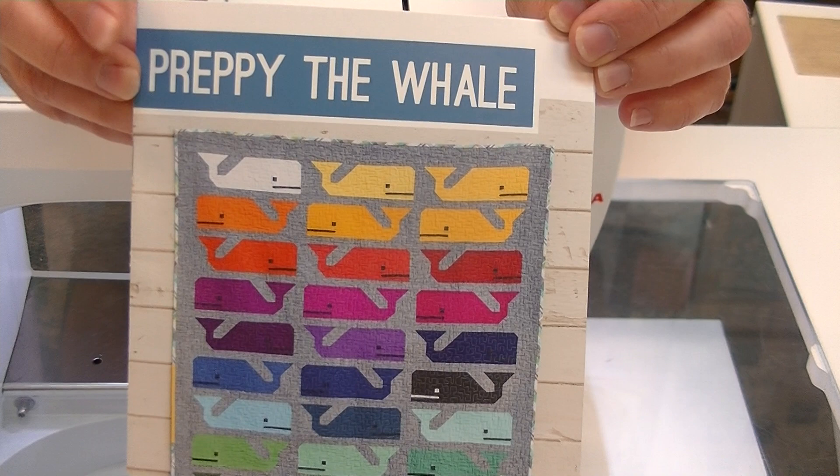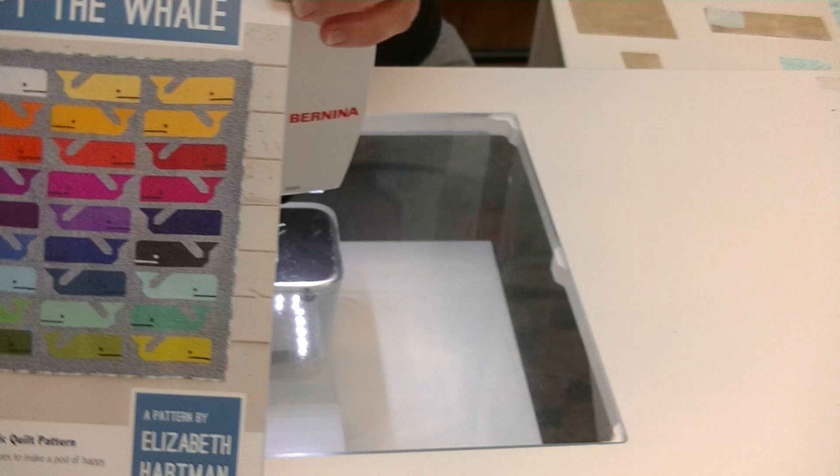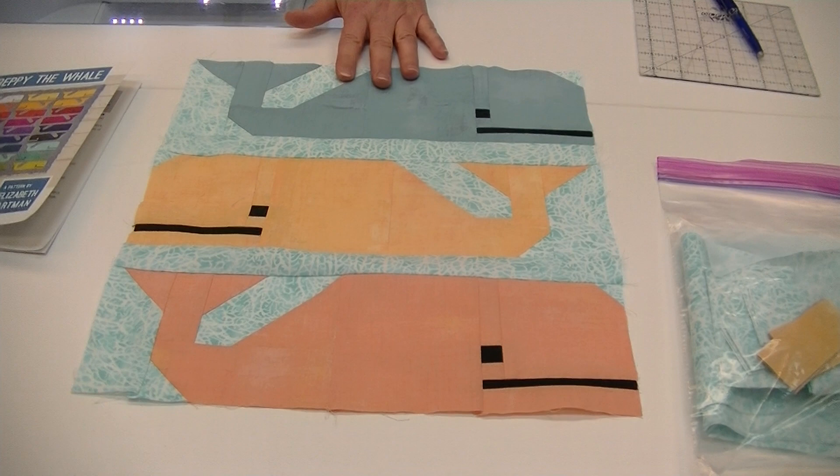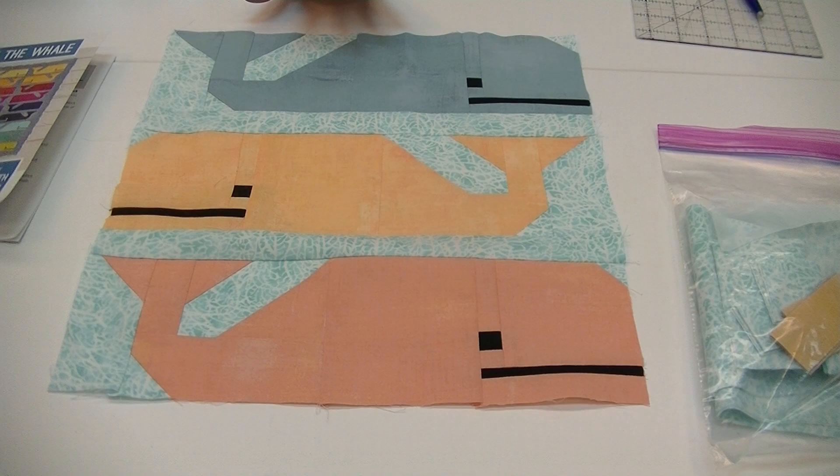The pattern has a picnic quilt that is 75 by 75, a child's quilt that's 47 by 50, and a mini quilt which is what I'm going to do today which is 19 by 25. The mini quilt will have four whales. Two of the whales are going to face to the right and two of the whales are going to face to the left.